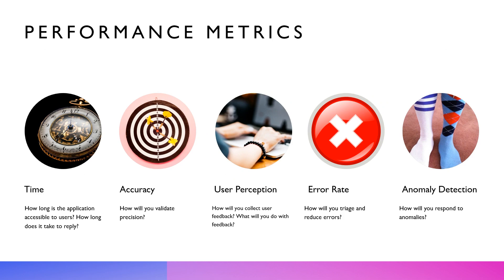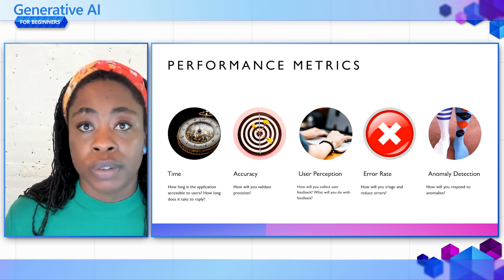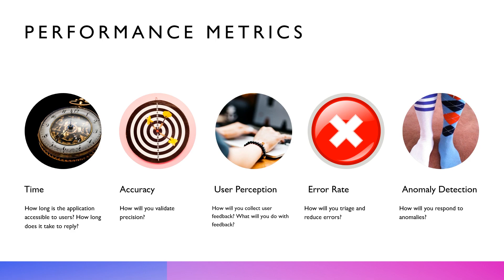Another consideration is accuracy — metrics like precision and recall that also create what is known as an F1 score can be helpful here. Moving on to user perception, this can come from surveys, user interviews, or user studies. The important thing is what you will do with the feedback and how you will apply and integrate it into your chat application. Another consideration is error rate — how often the model makes mistakes in understanding or its output. Finally, anomaly detection involves identifying unusual patterns that don't conform to expected behavior. You'll want to consider how you will respond to all these metrics.